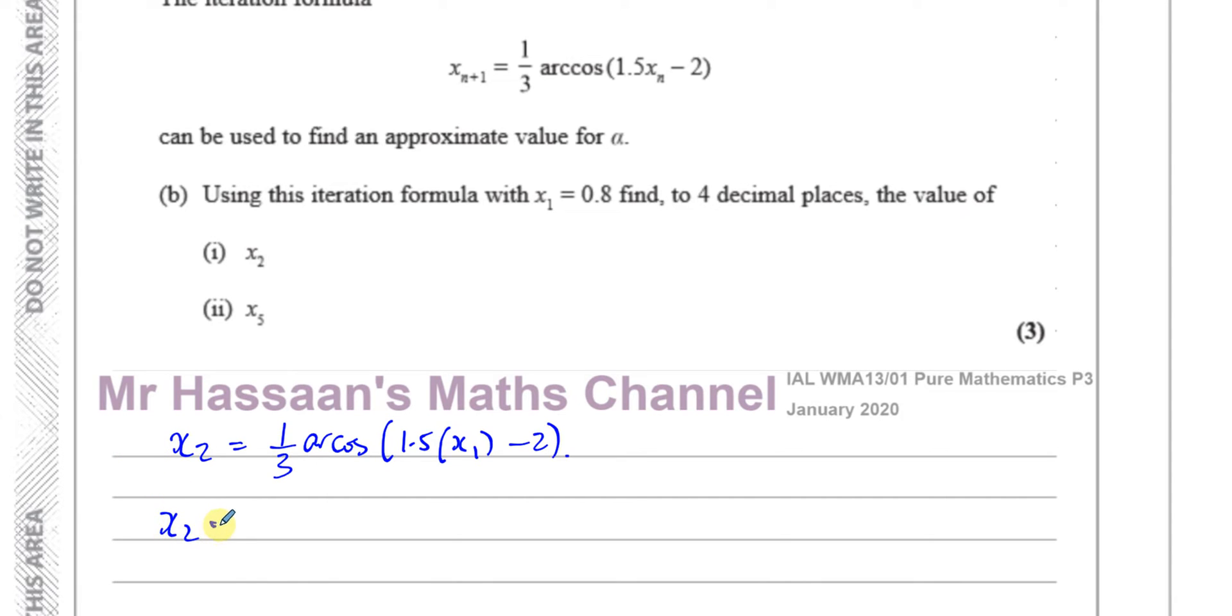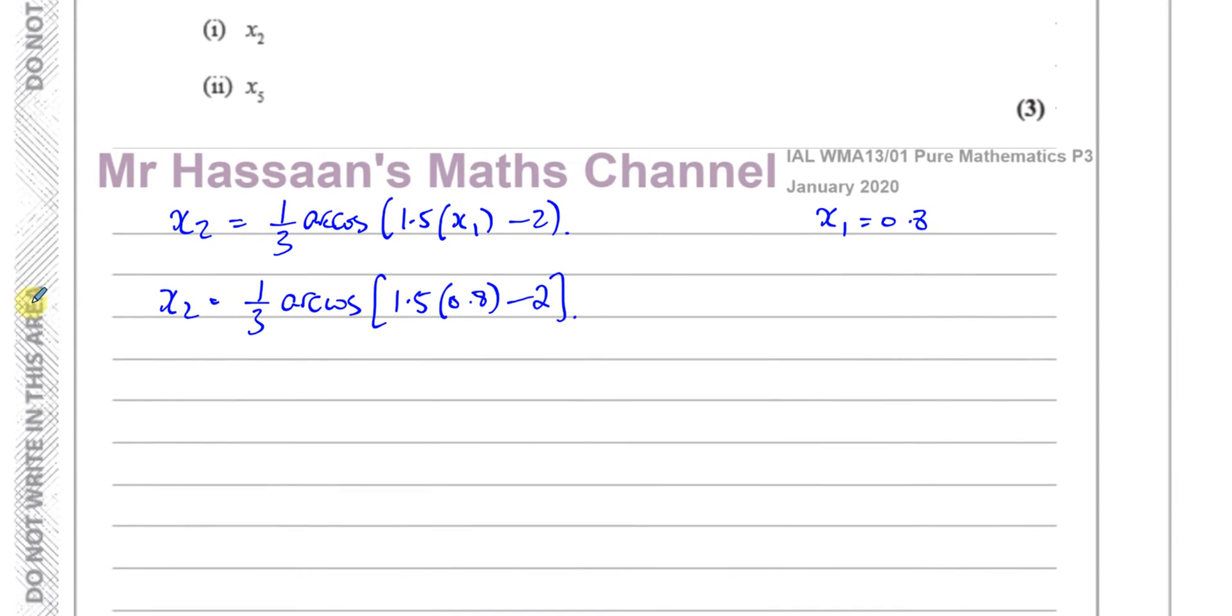So just to show that I understand, I've got to put x1 in here to find what x2 is. So I can say x2 equals, so I'm going to write the steps for the first one, arc cosine, another C there, and I've got 1.5 times x1, which is 0.8. Okay, they told us that x1 equals 0.8 minus 2.